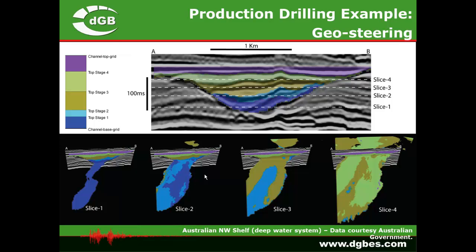On a much smaller scale, this example shows the HorizonCube built around a potential channel. A small HorizonCube was computed around the target area to understand the channel complex and help with geo-steering a potential well through the most beneficial reservoir units.